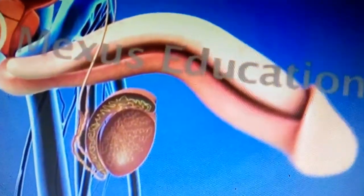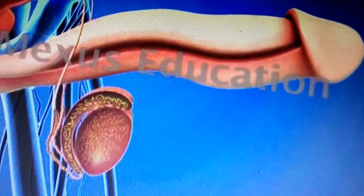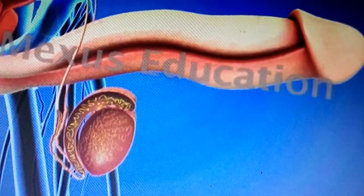The urethra is located in the penis. The penis contains erectile tissue with spaces that fill up with blood during sexual excitement, causing it to become erect.